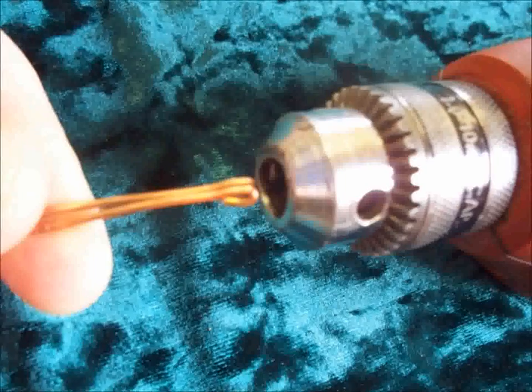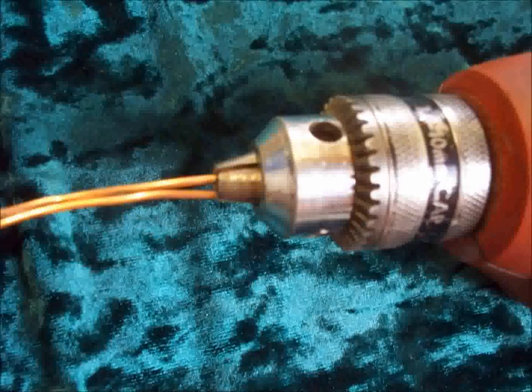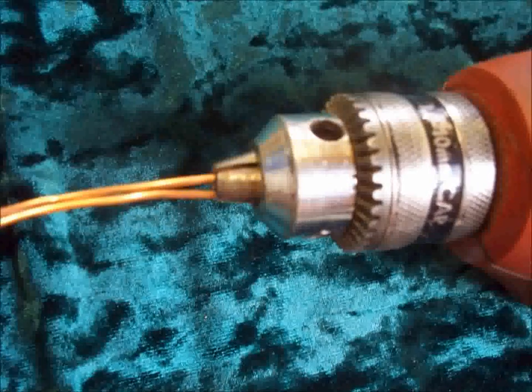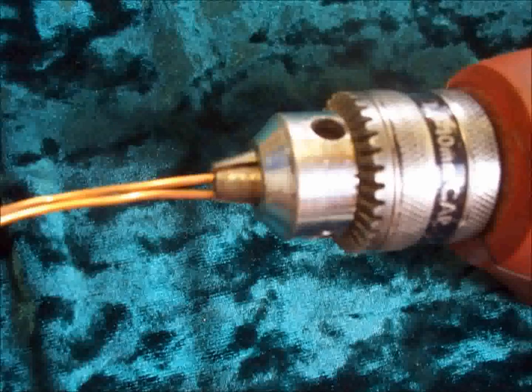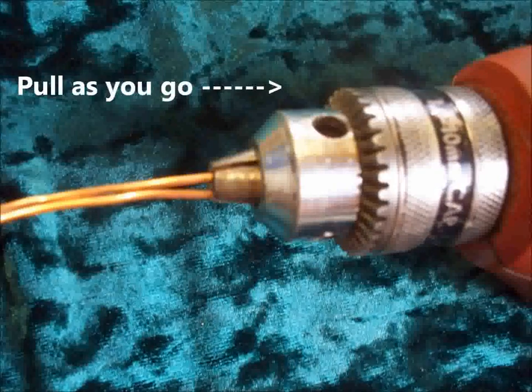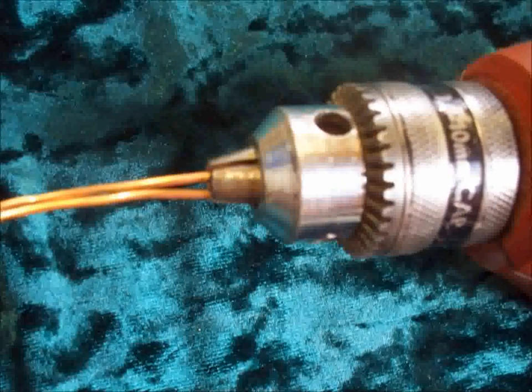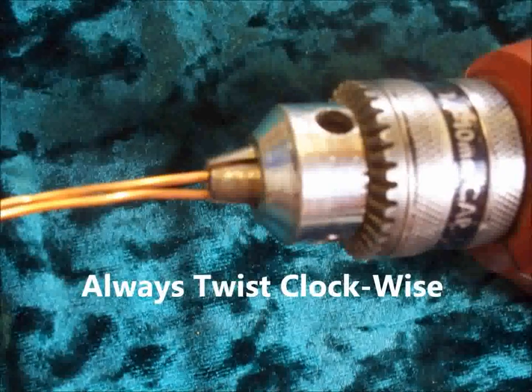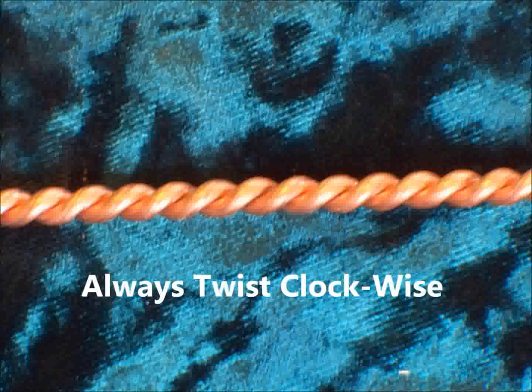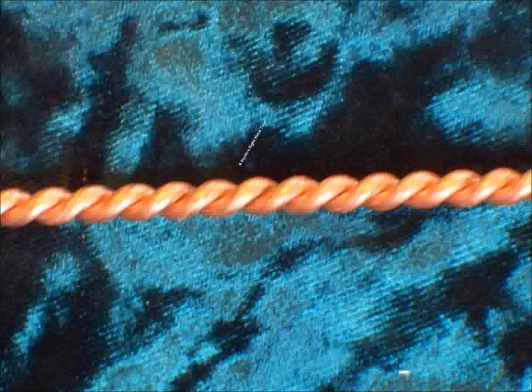Now we insert both the wires into the variable speed drill and tighten it down. Stand on the board and gently pull on the drill as you are spinning it. The direction of twist on the wire is important as well. We will do a right hand, or a clockwise twist, on all the wire that we spin.